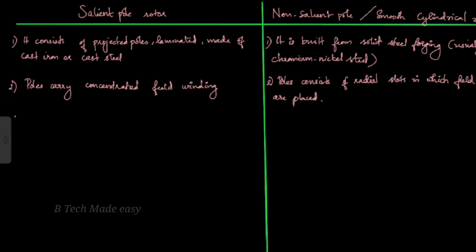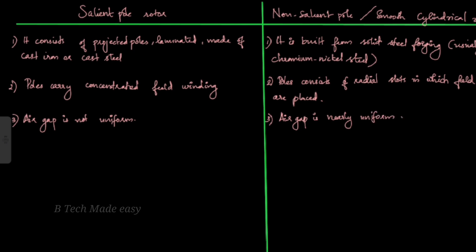Third point: in the case of the salient pole type rotor, the air gap is not uniform — that is very important. In the case of the non-salient pole type, the air gap is nearly uniform, essentially completely uniform. This is the third difference between the two types.